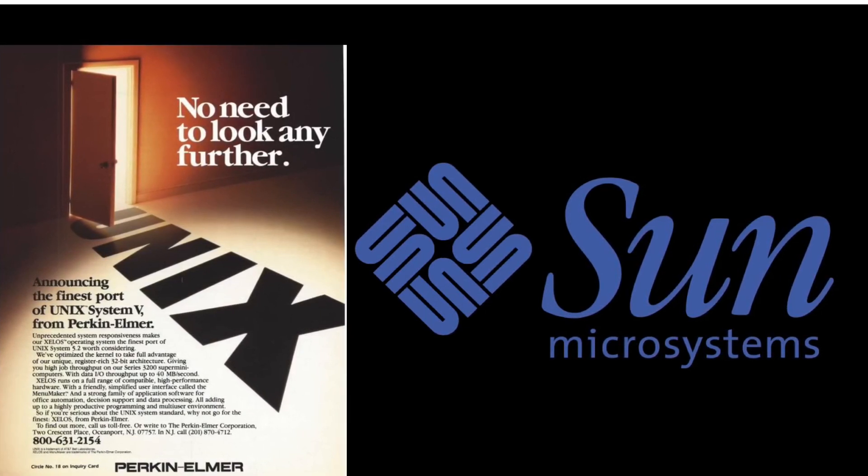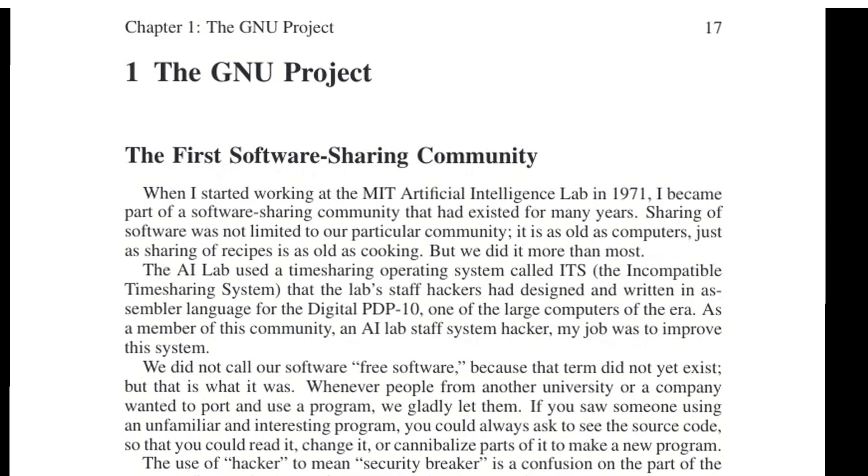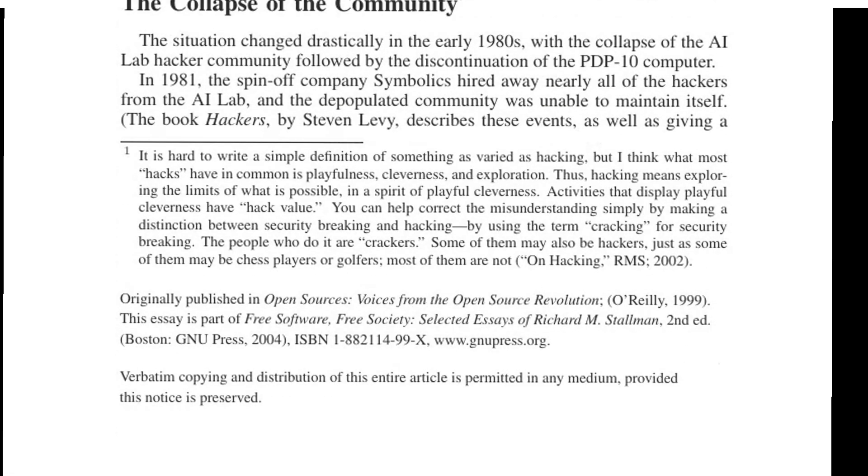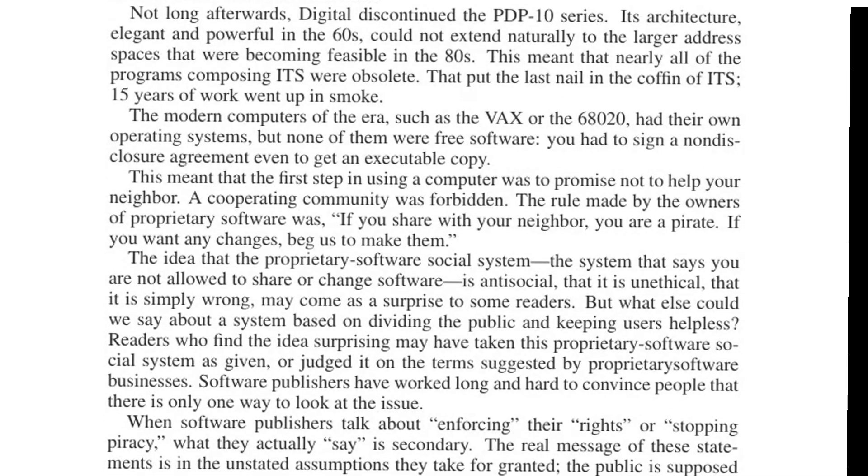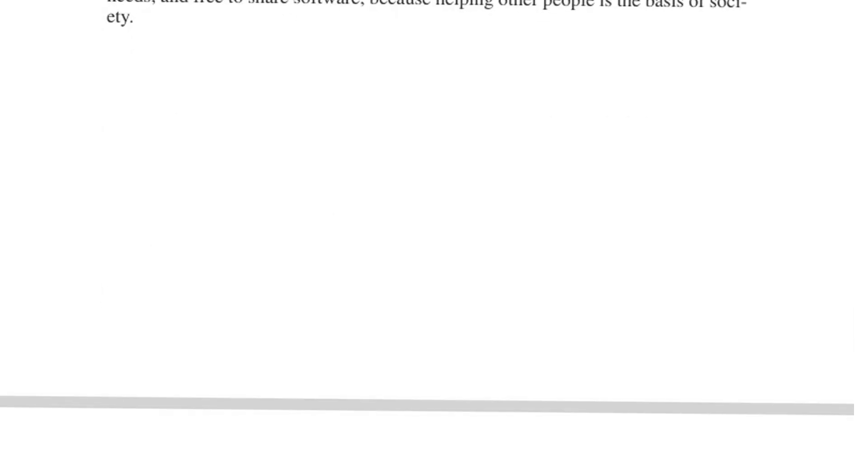In 1983, Richard Stallman launched the GNU project, aiming to create a free operating system compatible with Unix. GNU successfully developed many essential tools, but one key component was missing: the kernel.